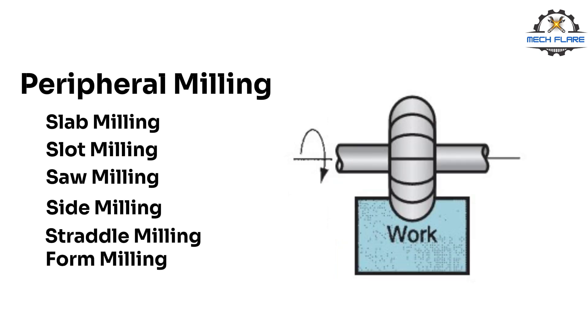In form milling, the milling teeth have a special profile that determines the shape of the slot that is cut in the workpiece. Form milling is therefore classified as a forming operation.